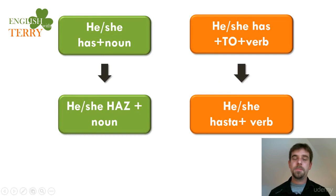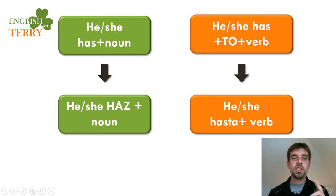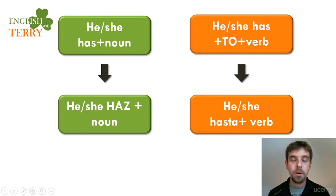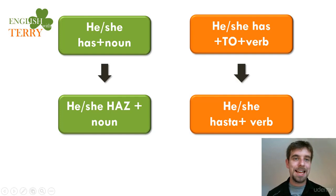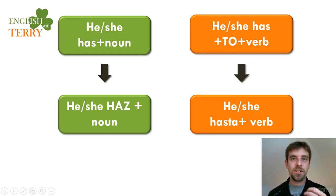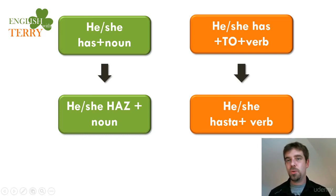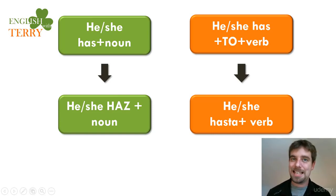Now, just like the last video, if we have he or she has and a noun — noun can be time, money, a job, whatever — the pronunciation is 'has.' Has. He or she has a job. Has time. But when we have he or she has to and a verb, it becomes 'has to.'